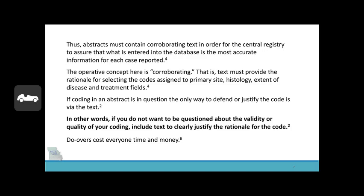The operative concept here is corroborating. Text must provide the rationale for selecting the codes assigned to the primary site, histology, extent of disease, and treatment fields. If coding in an abstract is in question, the only way to defend or justify the code is via the text. In other words, if you do not want to be questioned about the validity or quality of your coding, include text to clearly justify the rationale for the code. Do-overs cost everyone time and money.